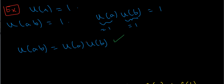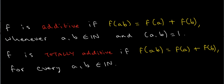There are also additive arithmetic functions. A function f is additive if f(ab) equals f(a) plus f(b), whenever a and b are natural numbers and a and b are coprime. And just as before, we can have a stronger condition: f is totally additive if f(ab) equals f(a) plus f(b) for all natural numbers a and b, not just coprime ones.